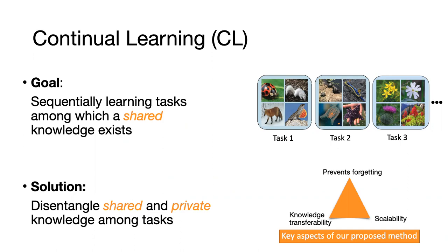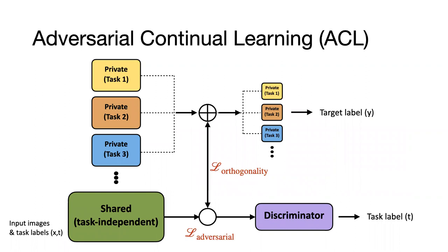Our solution is to disentangle this shared knowledge from the specific features unique to each task, such that it prevents forgetting, transfers knowledge well, and remains scalable. We introduce our approach as a hybrid algorithm that uses adversarial learning as well as an orthogonality constraint to disentangle task-specific and task-invariant features.